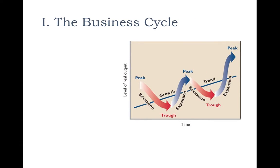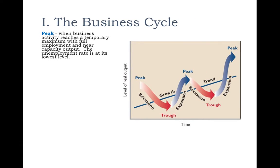There are four parts to the business cycle. There's no particular starting point, but they do follow the same sequence. The first is the peak — when things are the best. The economy is doing great, businesses are working at their full potential, everybody's working, we're at full employment, and unemployment is very low.